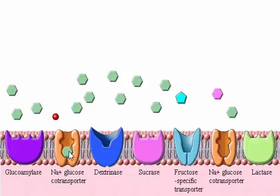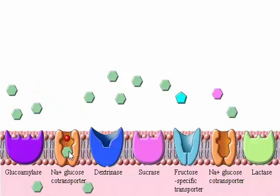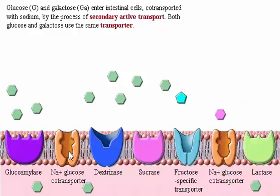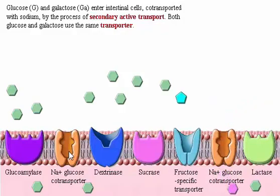Most nutrients are absorbed by transepithelial transport, moving first into the intestinal epithelial cells at their luminal surface, then out at their basal surface. Glucose and galactose enter intestinal cells co-transported with sodium by the process of secondary active transport. Notice that both glucose and galactose use the same transporter.